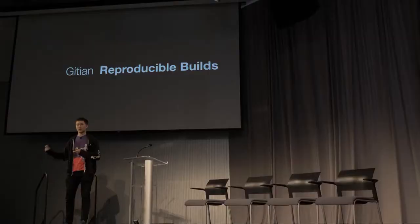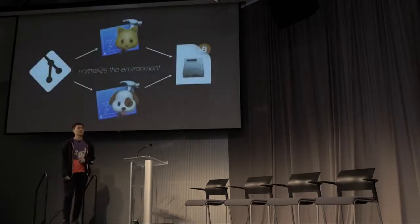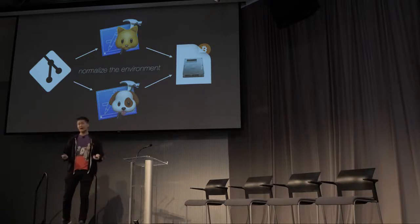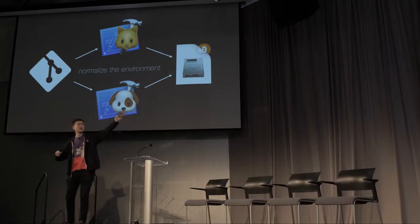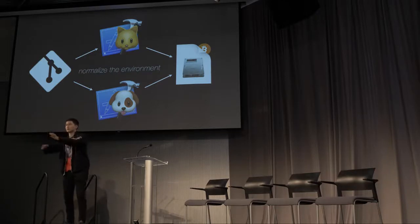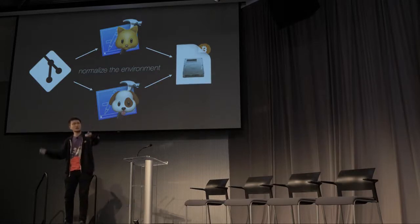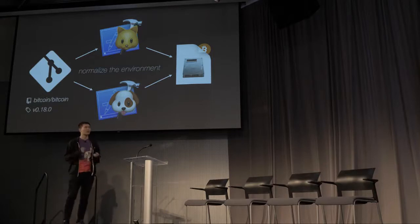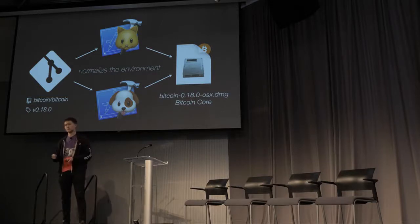We do this through a process called Gitian reproducible builds. This is a process pioneered by the Bitcoin community and was actually adopted by the Tor project for a while. The way Gitian does this is by normalizing the build environment for Bitcoin source code. The left side is the source code, the middle is people building it, and the right side is the output — the thing that people download as Bitcoin. It normalizes the environment such that it doesn't matter who builds it; the source code is going to correspond to the same output. We'll have bit-for-bit identical output if we build Bitcoin 0.18 and we'll get the same disk image every time.